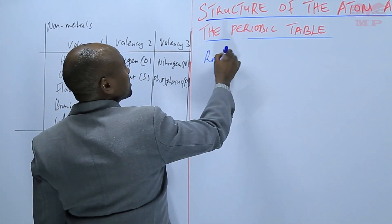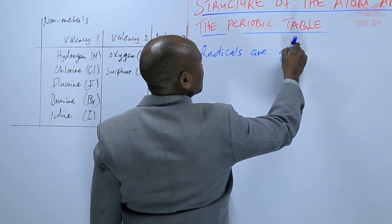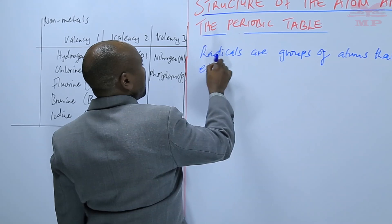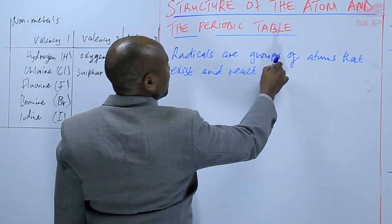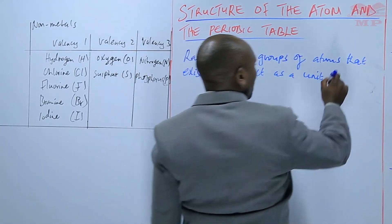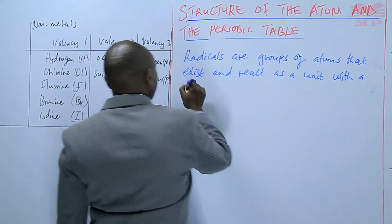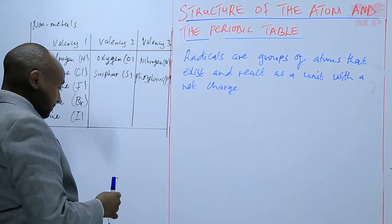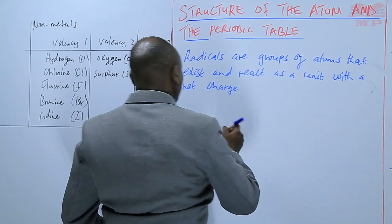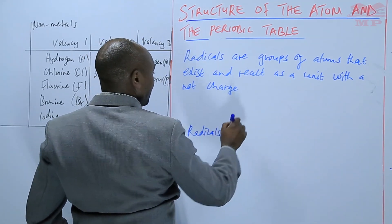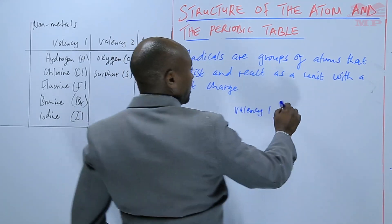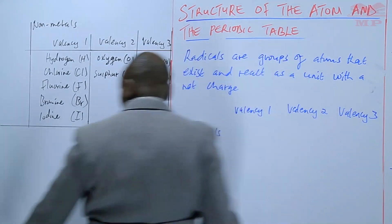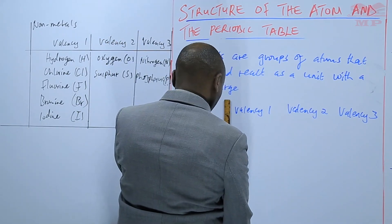Then we have what you call radicals. These are groups of atoms that exist and react as a unit with a net charge. Even radicals have their valencies — some have a valency of 1, others a valency of 2, and others a valency of 3.